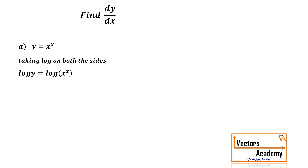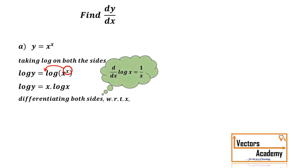When we take log on both sides, the question becomes log y is equal to log of x raised to x. Remembering the properties of log, any value which is in the power comes into multiplication, so the question becomes log y is equal to x into log x. Now we differentiate both sides. The derivative of log y, by the formula, is 1 by y, and since x is replaced by y, by chain rule we take the derivative of y, that is dy by dx.